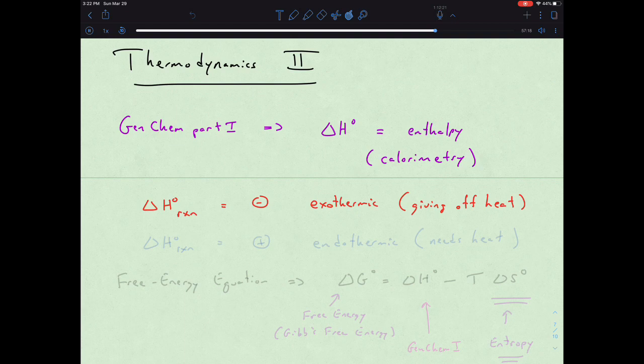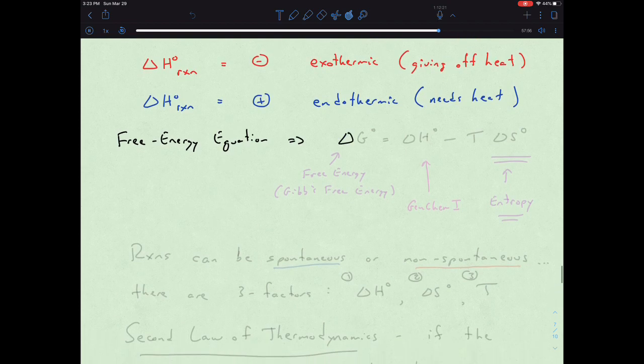And then we had the other side of the coin, which is our delta H of the reaction would actually be positive or endothermic, needs heat. So we had that notion of delta H and we were always hinting at the idea of the free energy equation, which was delta G is equal to delta H minus T delta S.